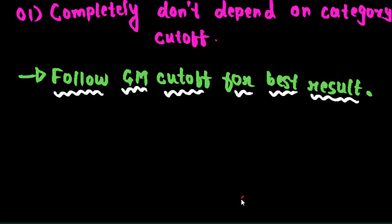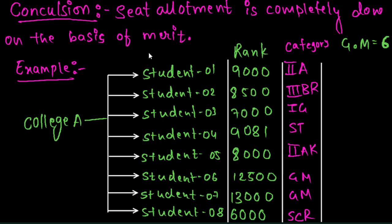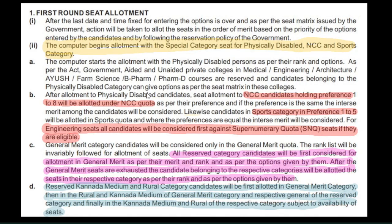So mostly, you have to be in general merit. First of all, you have to be in the software list. The computer begins allotment with special category seats for physically disabled, NCC, and sports. First, you have to be in the special category if eligible.